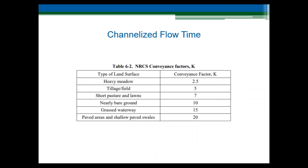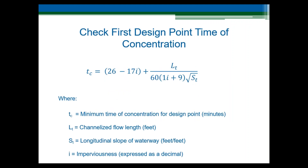Table 6-2 from the UDFCD criteria manual provides conveyance coefficients selected based on the channel or conveyance lining. The overall time of concentration is determined by adding the overland flow time and the concentrated flow time, and this is the duration used to determine the appropriate rainfall intensity. There is also an important check on the minimum time of concentration for the first design point. Using variables L sub t (channelized flow length in feet), S sub t (longitudinal slope in feet per feet), and I (imperviousness as a decimal), this empirical equation calculates a minimum time of concentration. The minimum of the calculated Tc and this check value is selected.